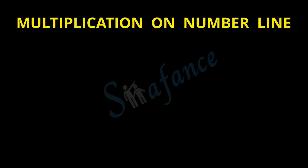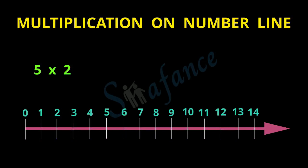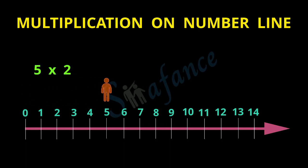Now we will see multiplication on number line. Let us multiply 5 and 2. First we draw the number line, and as we have seen in addition and subtraction, we place the person at digit 0. We start from digit 0. Now 5 multiplied by 2 means 5 is repeated twice, so the person would travel 5 spaces from digit 0 — 1, 2, 3, 4, 5. Now the person is at digit 5.